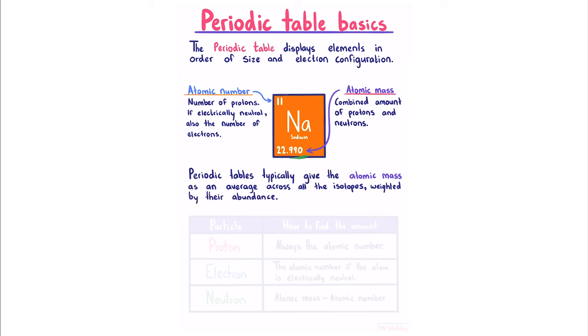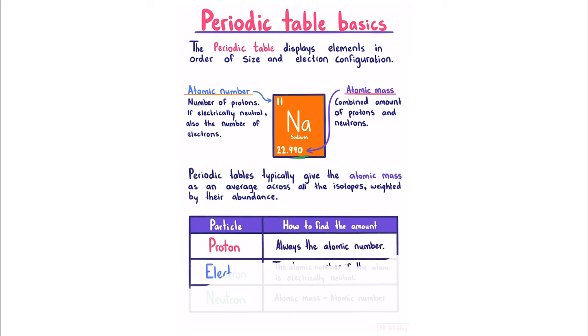And now to make things simple, here's a table of how to find the amount of any given particle. The proton is always the atomic number, the electron is the atomic number if the atom is electrically neutral, and the neutron is the atomic mass minus the atomic number.